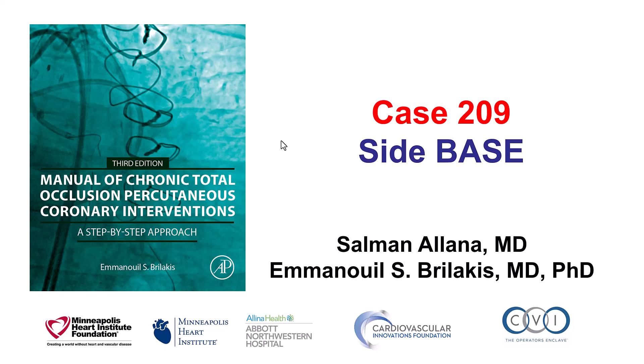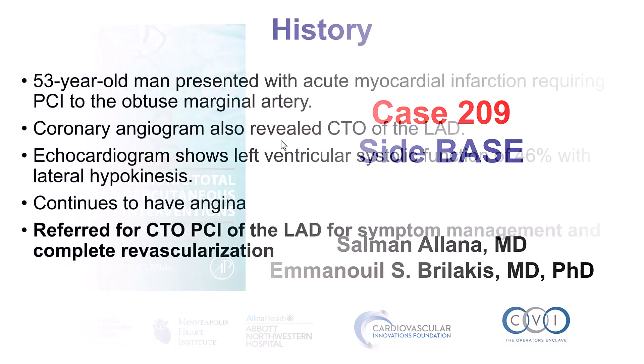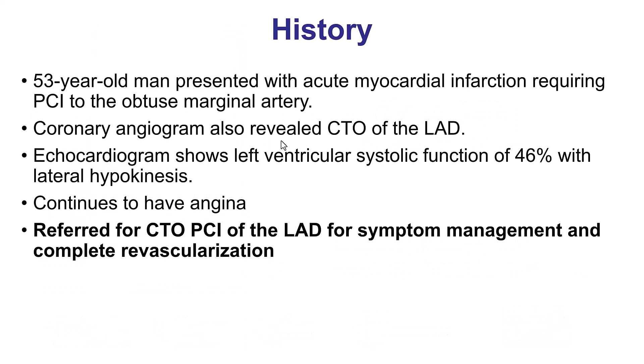Hi, this is Salman Alana and Manos Brilakis, and this is case 209 for the Manual of CTO Interventions. This case illustrates the side-based technique for treating a CTO with an ambiguous proximal cap. The patient presented with an acute MI due to a lesion in the obtuse marginal that was successfully treated, but was also found to have a CTO of the LAD, and was subsequently referred for recanalizing the LAD CTO, both to improve symptoms and for complete revascularization.